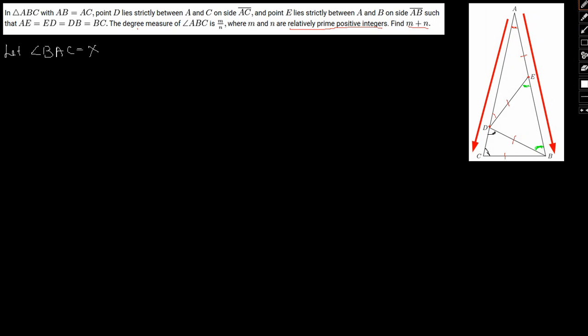So angle BAC will be this particular angle, I am taking this as X. So as a result this angle will be X and also this particular angle will be 180 minus twice X. So let me just write this down. Therefore angle ADE equal to angle AED equal to X.